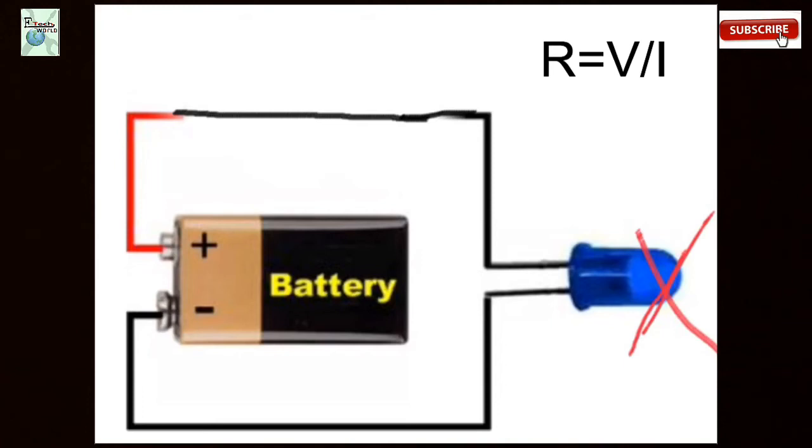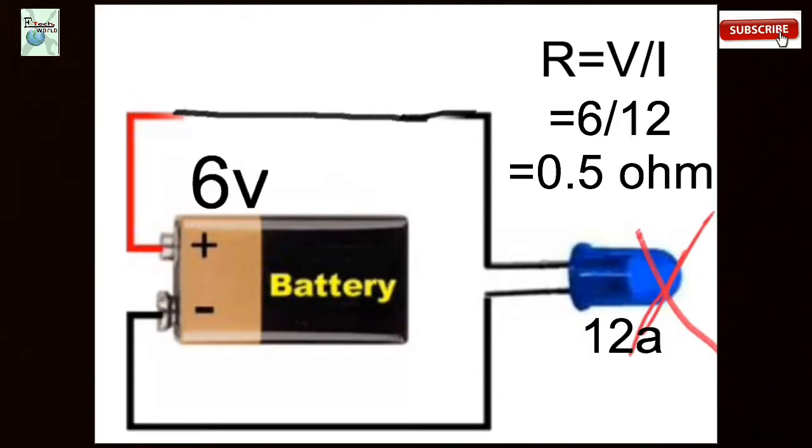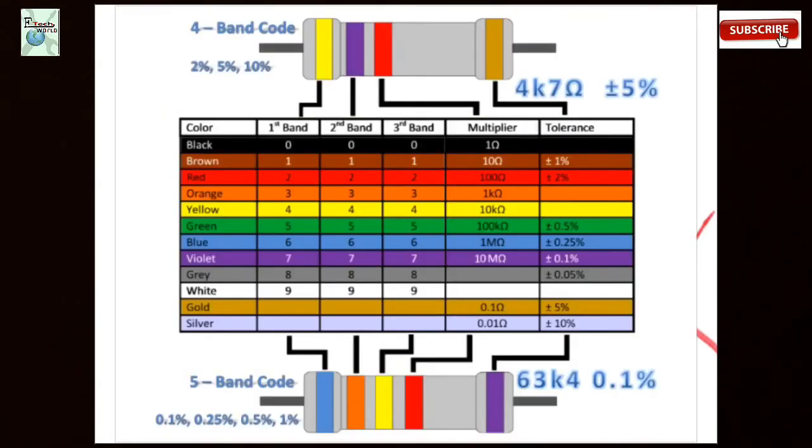Now we are going to use Ohm's law. In the circuit there is a battery value of 6 volts and the LED is 12 milliamps. So the Ohm's law formula: R equals V by I. So 6 divided by 12, the resistance value is 0.5 ohm.